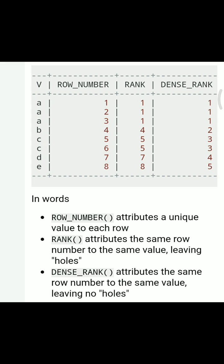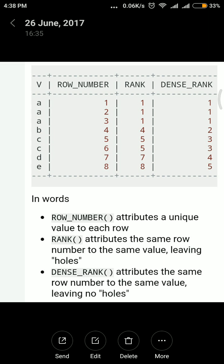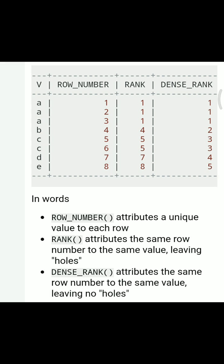DENSE_RANK will give a unique number to the unique value. That means it won't give different sequence numbers to the same value. If you see here, for 'a' it has given 1, for the second row 'a' it has given 1, for the third row 'a' value it has given 1. For the fourth row, the value has changed in the V column to 'b'.